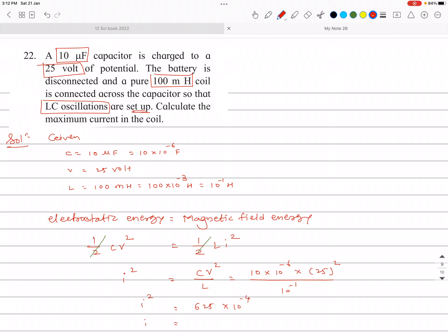So we get I is equal to, we can write 25 into 10 raised to minus 2, and it is in amperes. So this is the answer for the problem, or the same answer you can write like this: I is equal to 0.25 ampere. So this is the answer for question number 22.